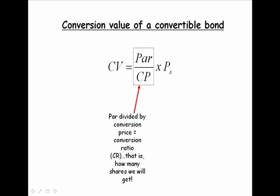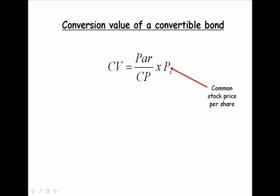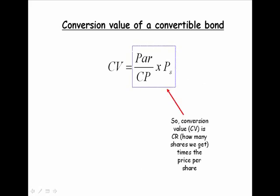If we take the par value divided by the conversion price, that gives us the conversion ratio — that is, how many shares we're going to get if we convert this bond into common stock. If we multiply the conversion ratio times the common stock price per share, then we get the conversion value.